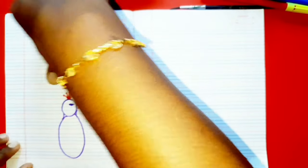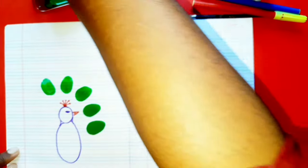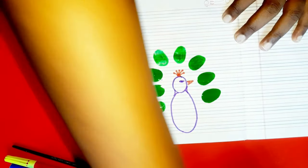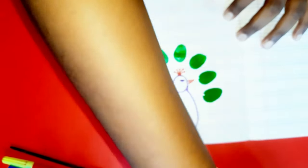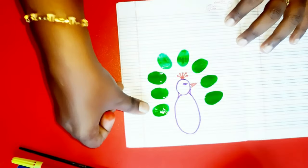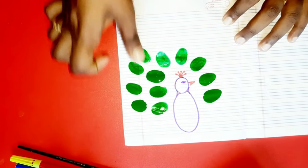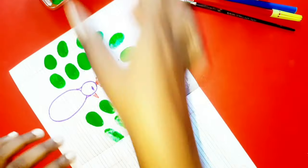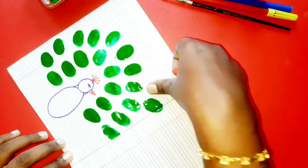So take your thumb and dip the green color and let's make the first layer. So thumb print around the peacock like this and again do the same one more layer.